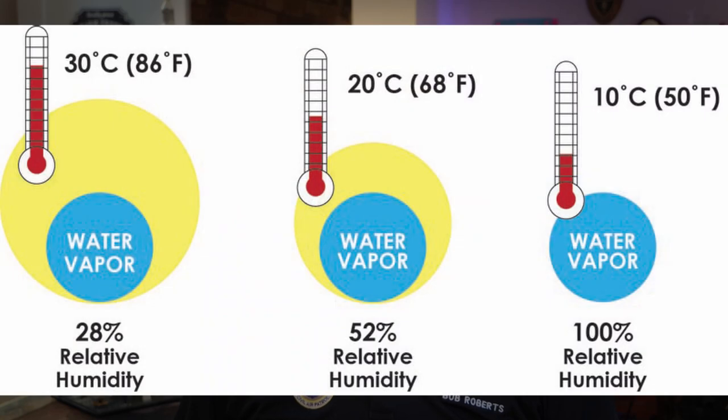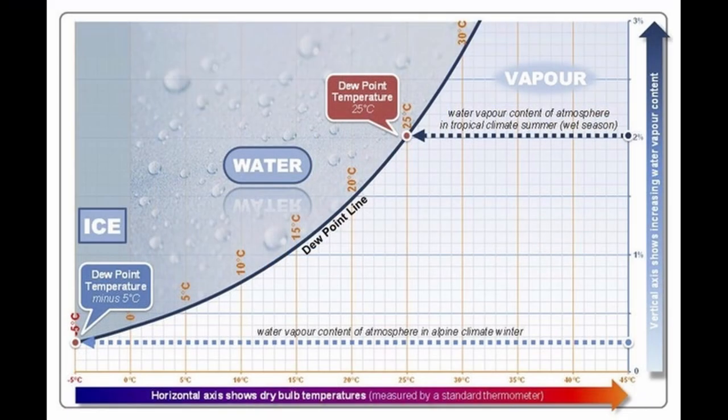Air does not have a set level of saturation at all times — it changes with both pressure and temperature. The colder the air at normal ground-level atmospheric pressures, the less moisture the air will hold. The hotter the air, the more moisture it can hold, which is why it can feel so stuffy on a hot summer day. The exact temperature at which the air is saturated and holding all the moisture in it is called the dew point. It is constantly changing depending on temperature and how much moisture is in the air at a given time.